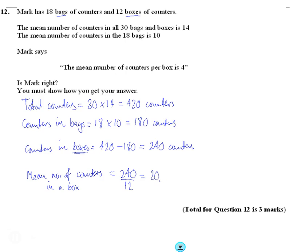There's an average of 20 counters in a box. Mark says that number is 4. So Mark is wrong.